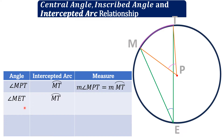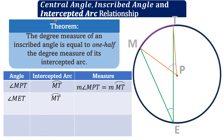How do we find the measure of angle MET? Angle MET is an inscribed angle because its vertex is on the circle, and its intercepted arc is arc MT. A theorem states that the degree measure of an inscribed angle is equal to one-half the degree measure of its intercepted arc. Therefore, the measure of angle MET equals the measure of arc MT divided by 2.